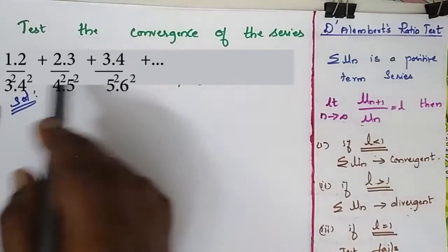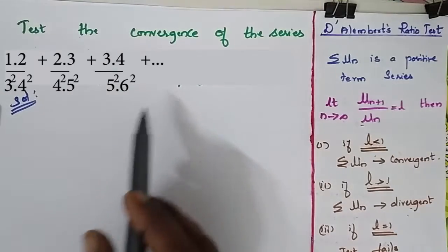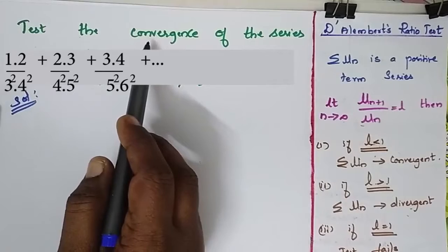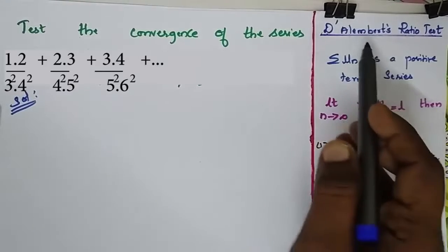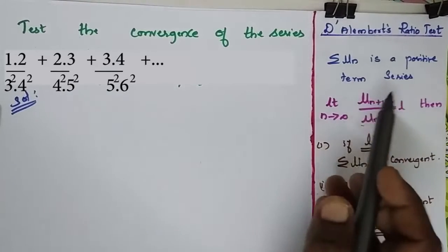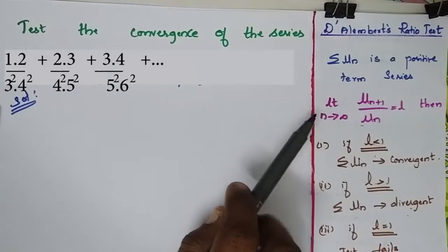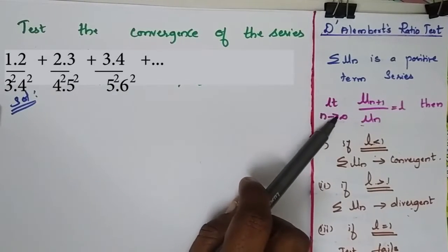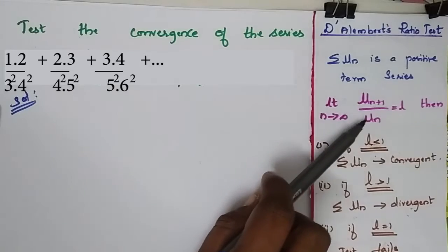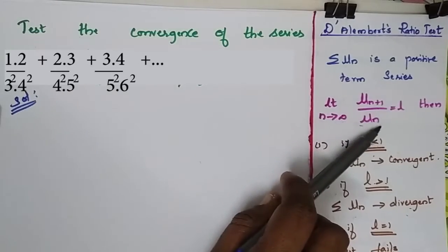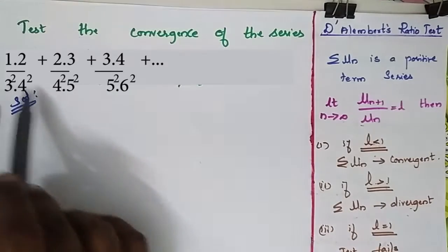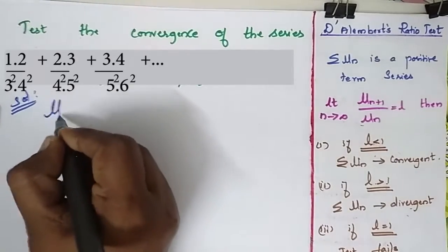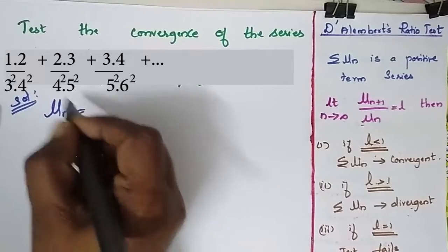Test the convergence of the given series. I am going to find the convergence by D'Alembert's ratio test. For that I have to find the limit as n tends to infinity of u(n+1) by u(n). So I have to generalize this term which becomes my u(n).